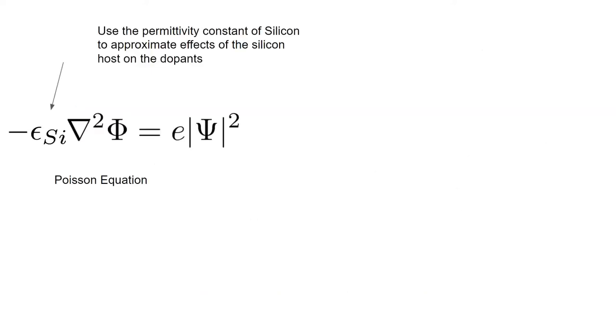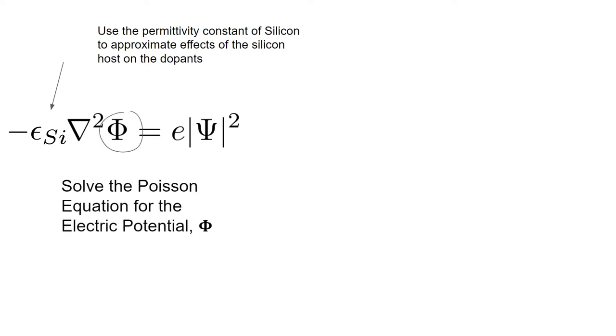One way that we can compute the Coulomb repulsion energy is by starting off with the Poisson equation from E&M, which relates the electric potential to the charge density in a given region. If we know the wave function of the electrons, then we can use that as the charge density in the Poisson equation. Once we solve the Poisson equation for the electric potential,